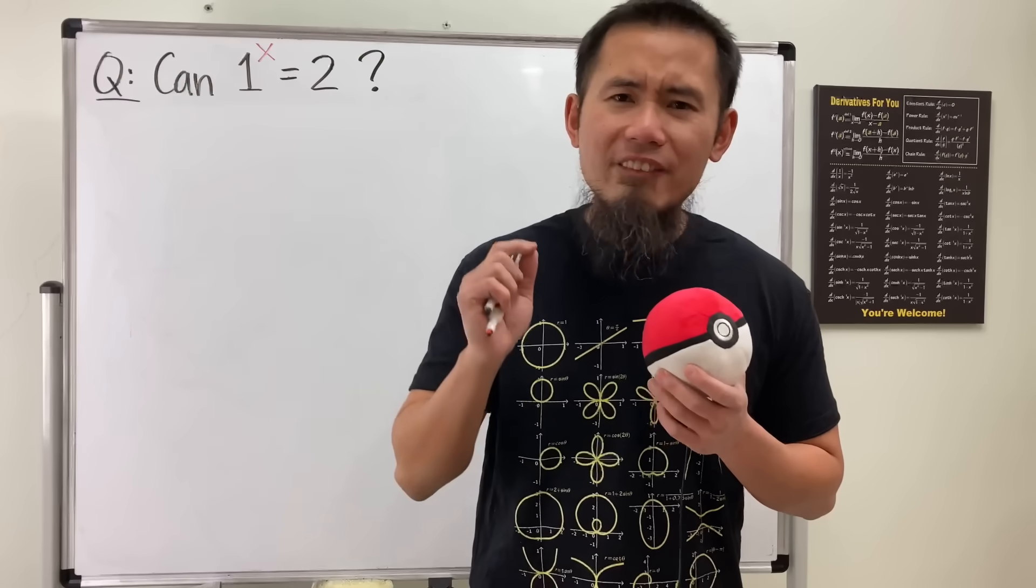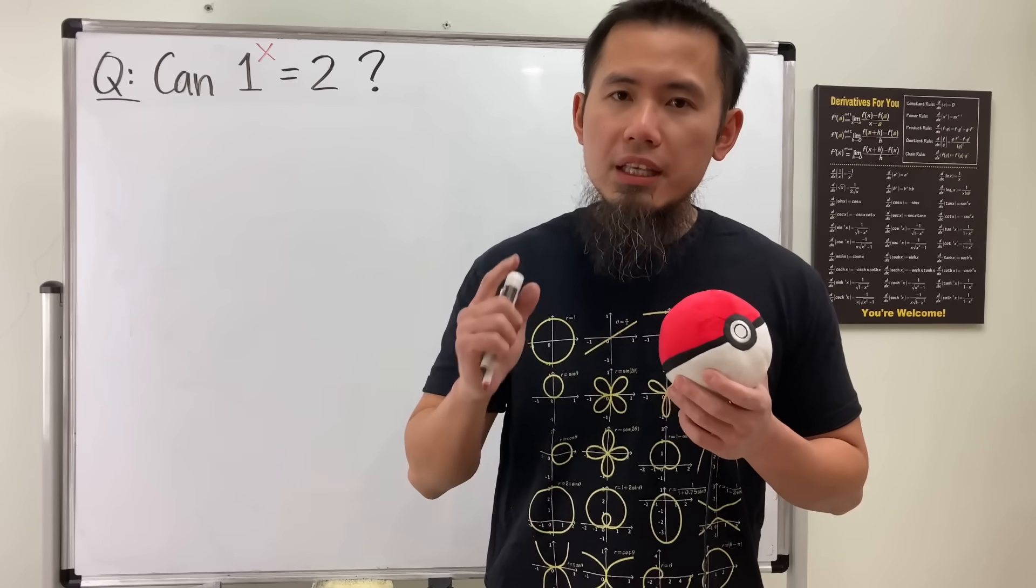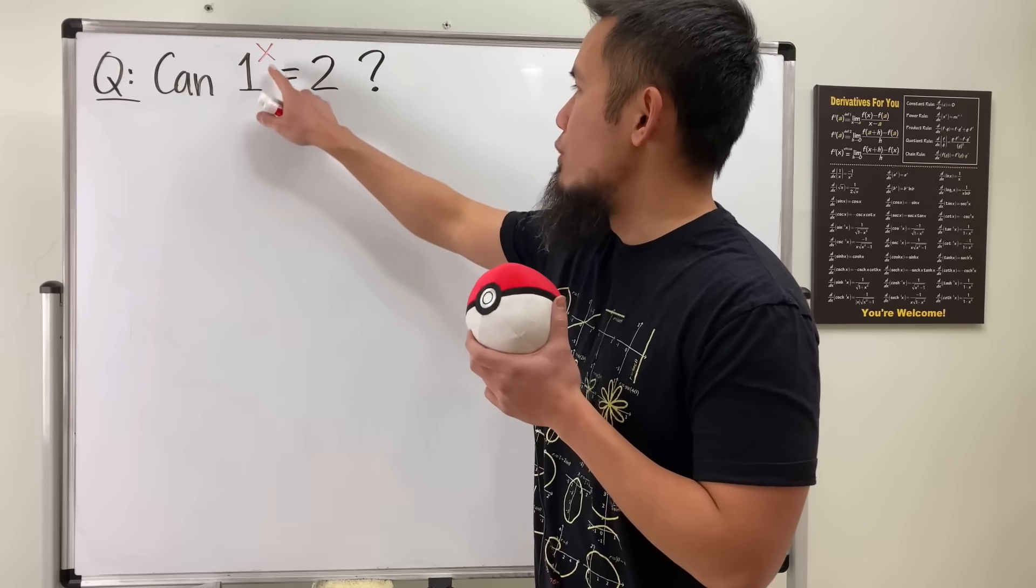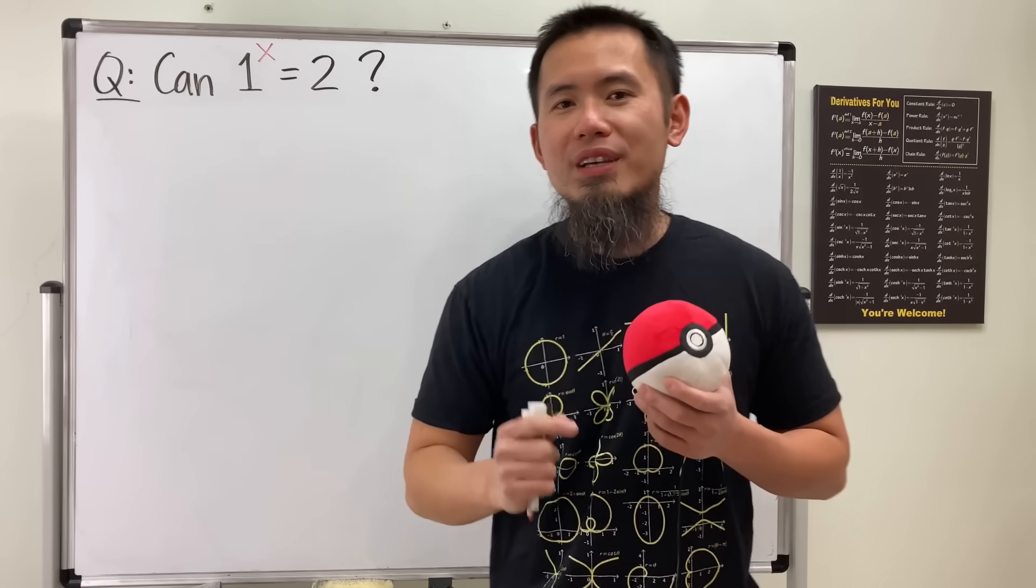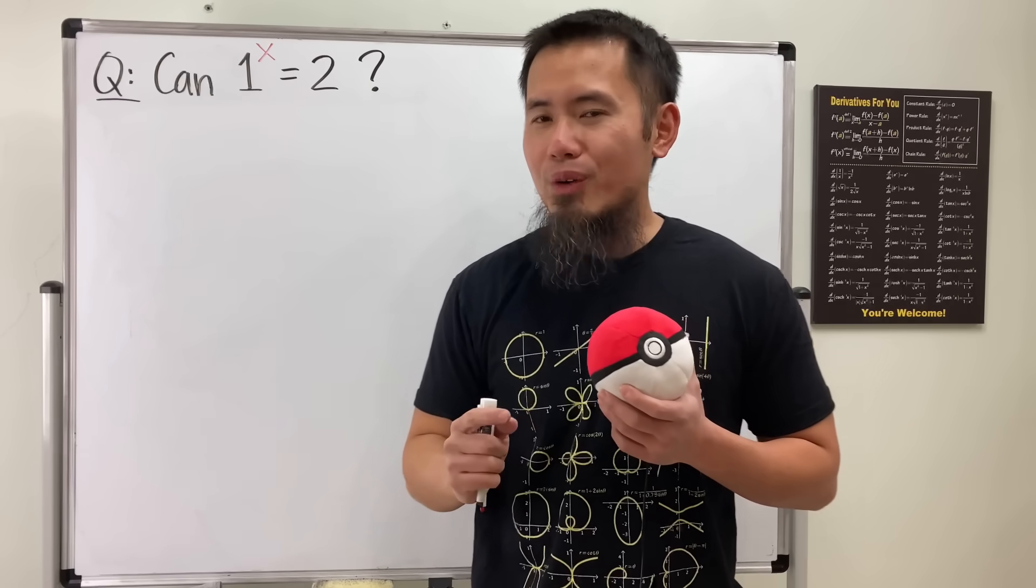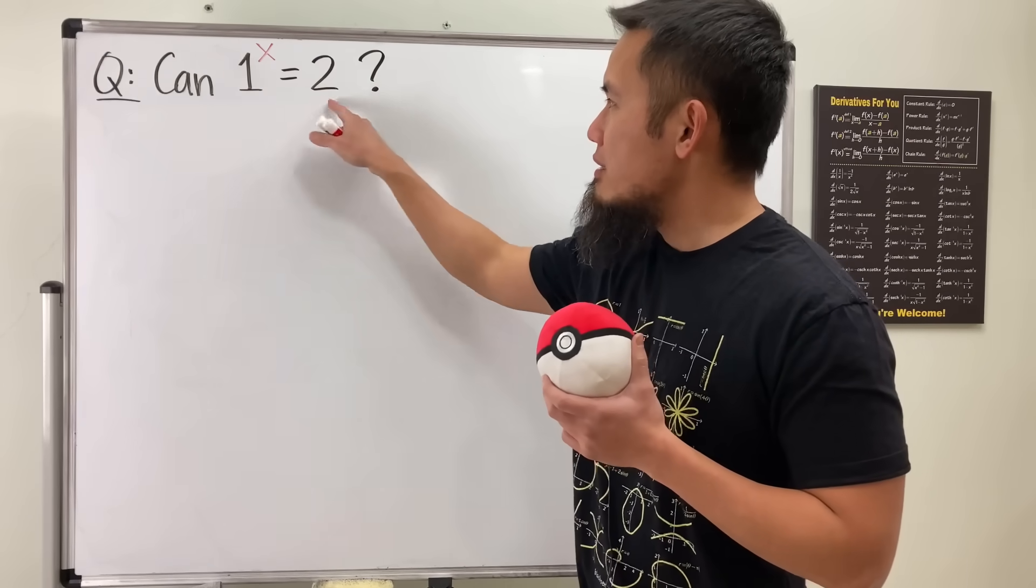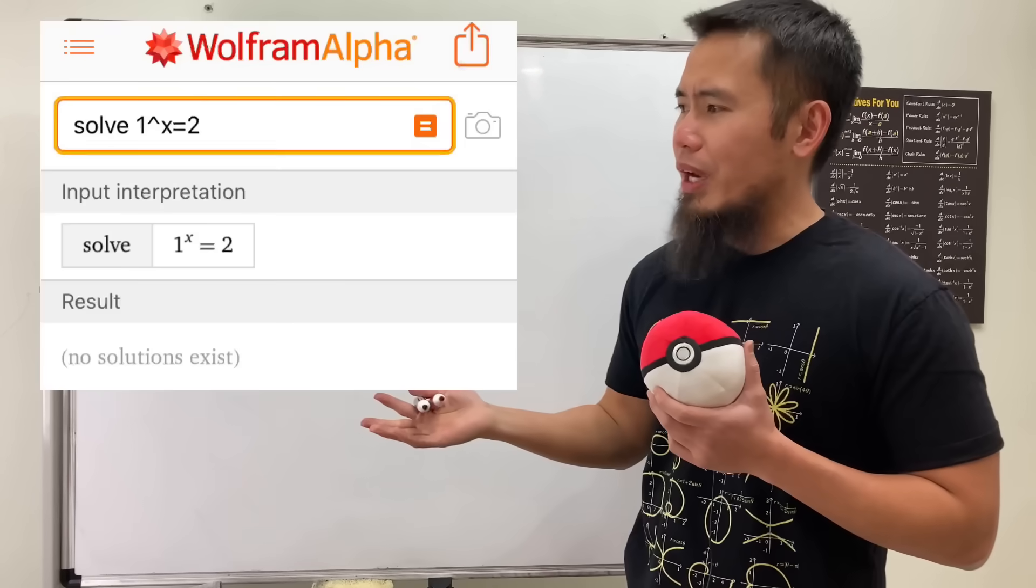Okay, let's do something fun. Here I have a very interesting question for you guys. Is it possible to have 1 to some power and the result is equal to 2? What do you guys think? Well, let me tell you, if you enter this into WolframAlpha, you will see right here it shows no solution.